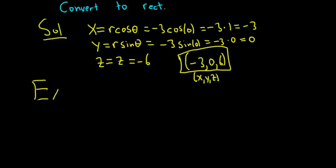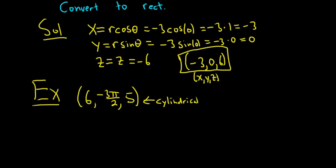So, example. Say we have the point (6, -3π/2, 5). And so this is a point in cylindrical coordinates. And so this can be written as (r, theta, z).